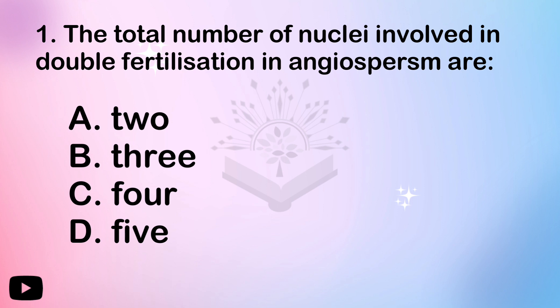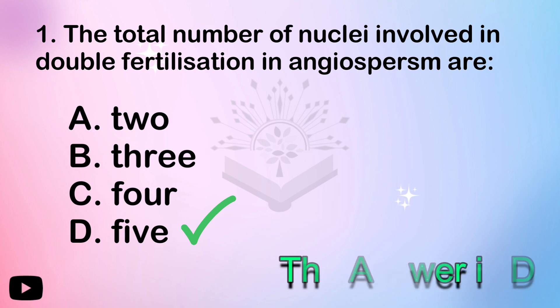If you consider the double fertilization process: one segment of the male gamete, one segment of the polar nuclei, one segment of the male nucleus — that gives us the count. The answer is D — five.